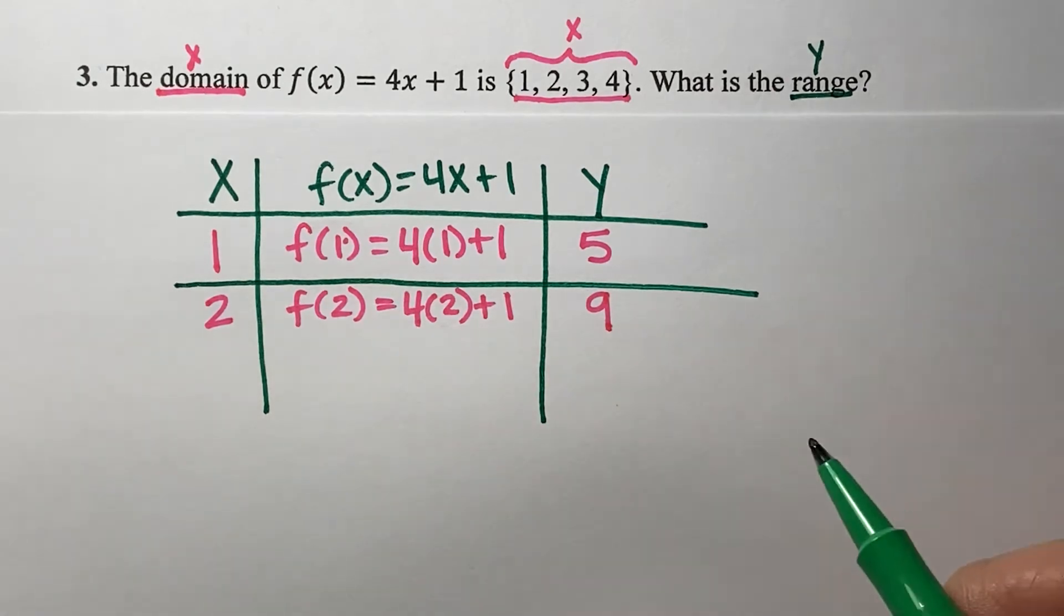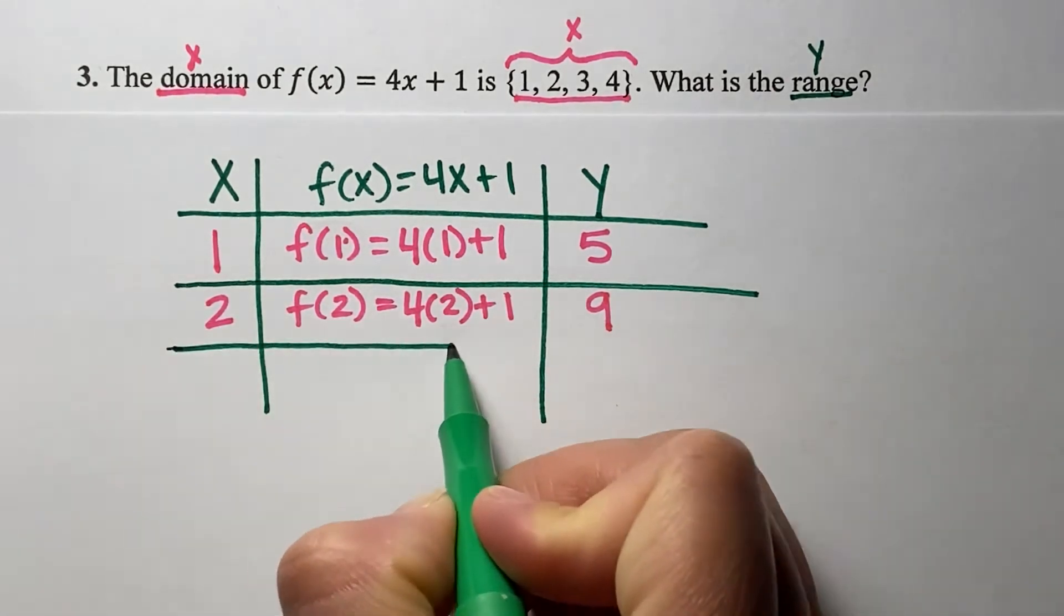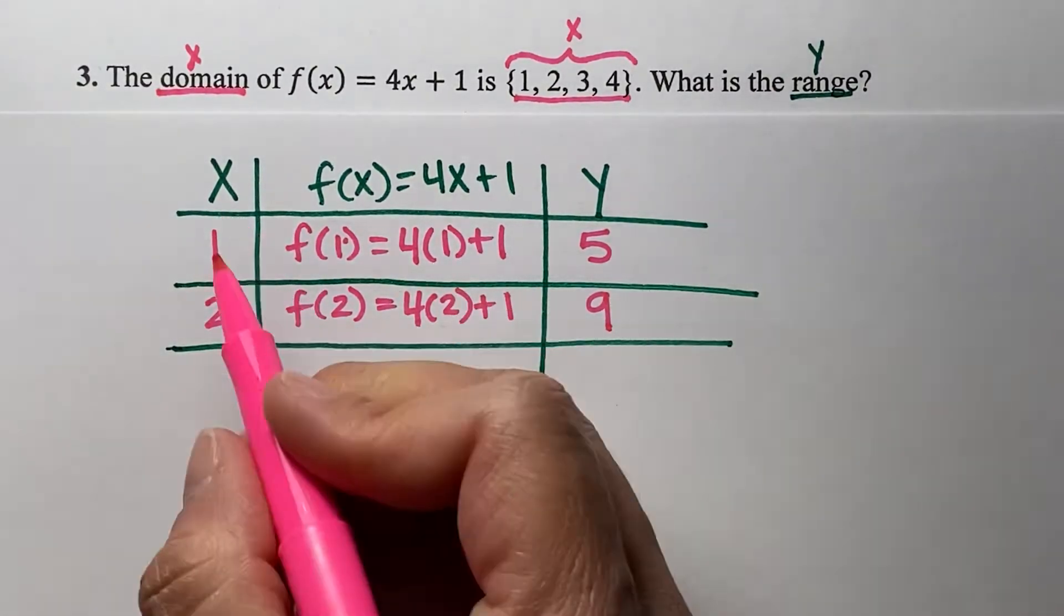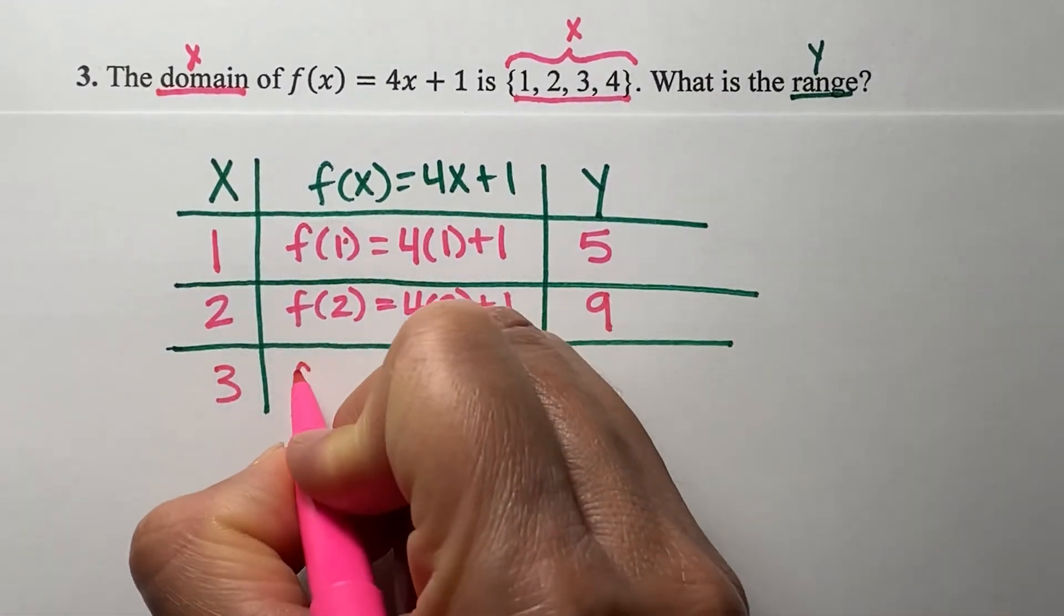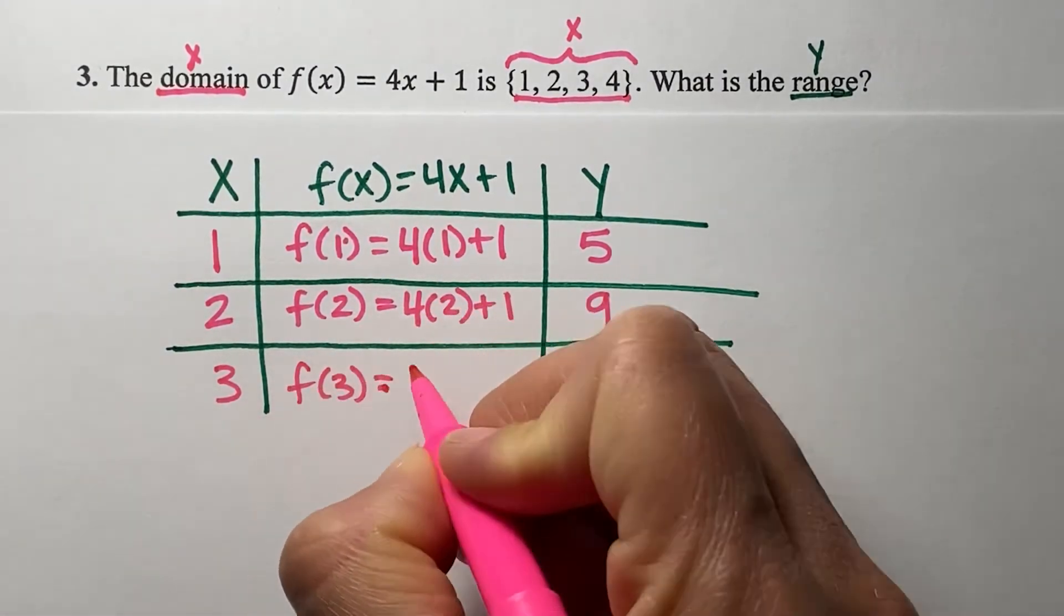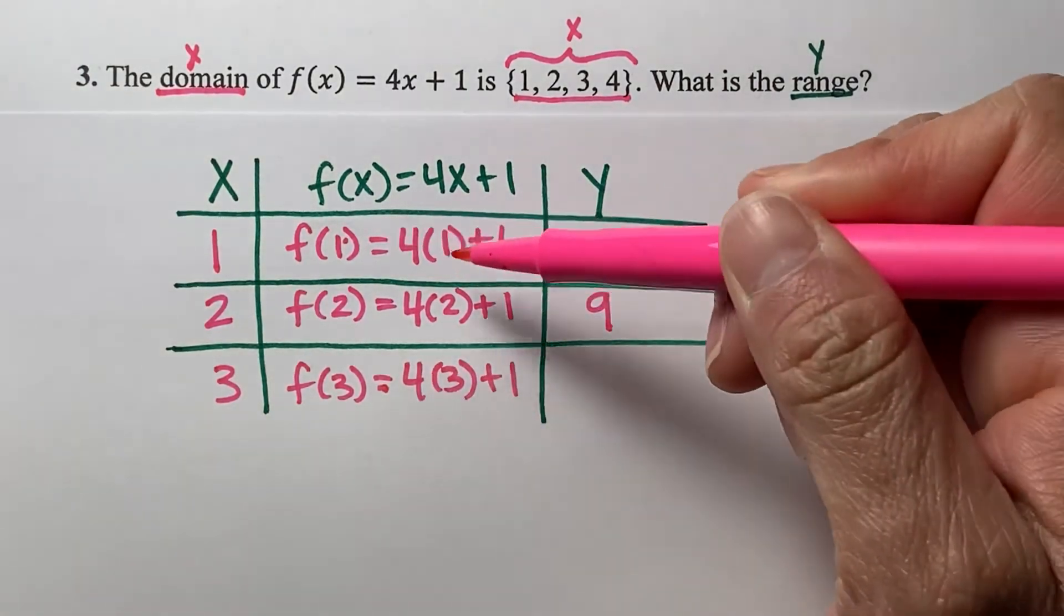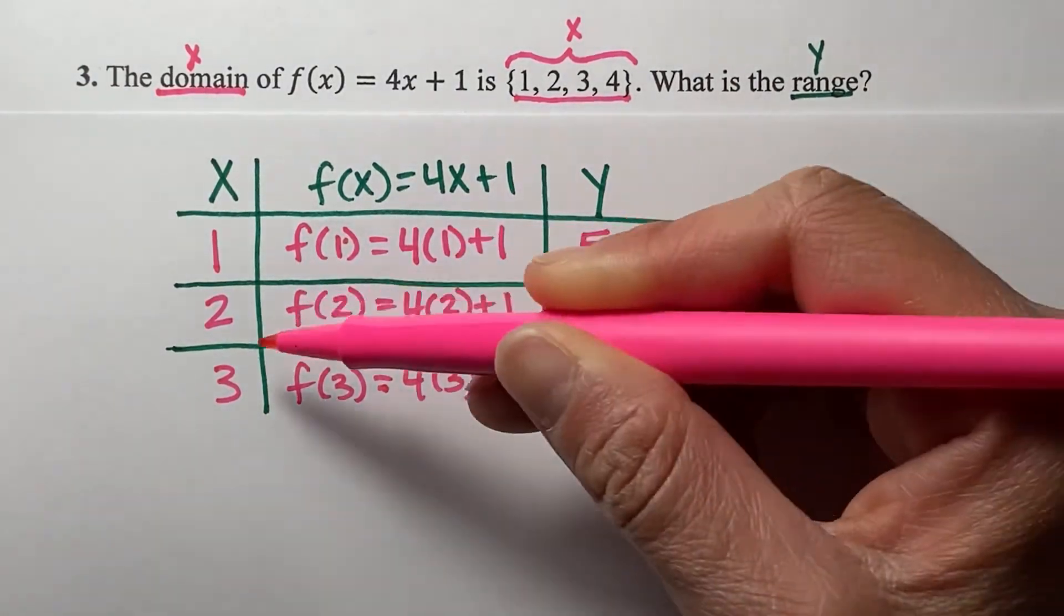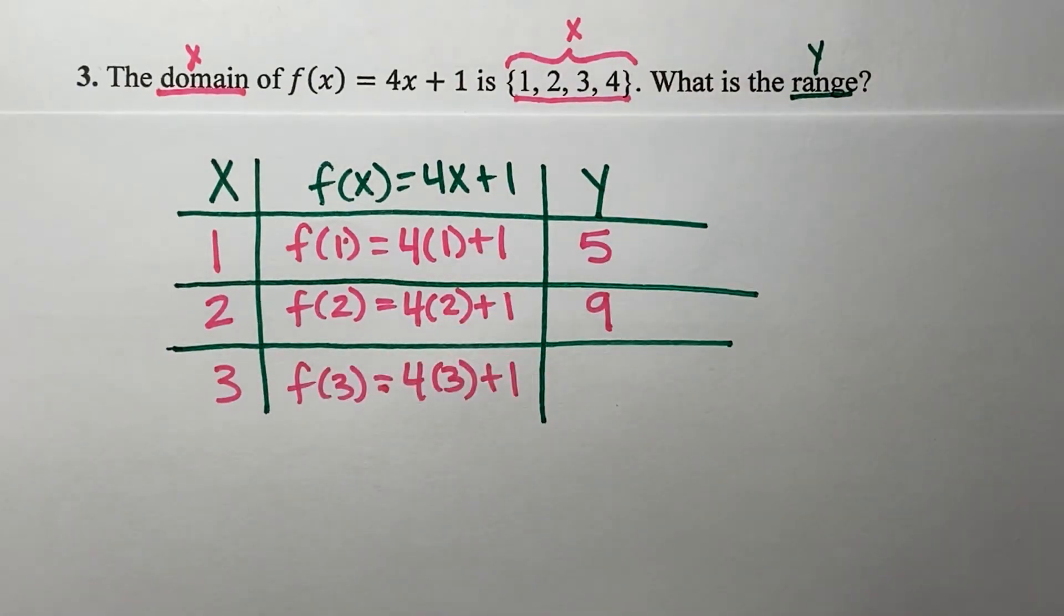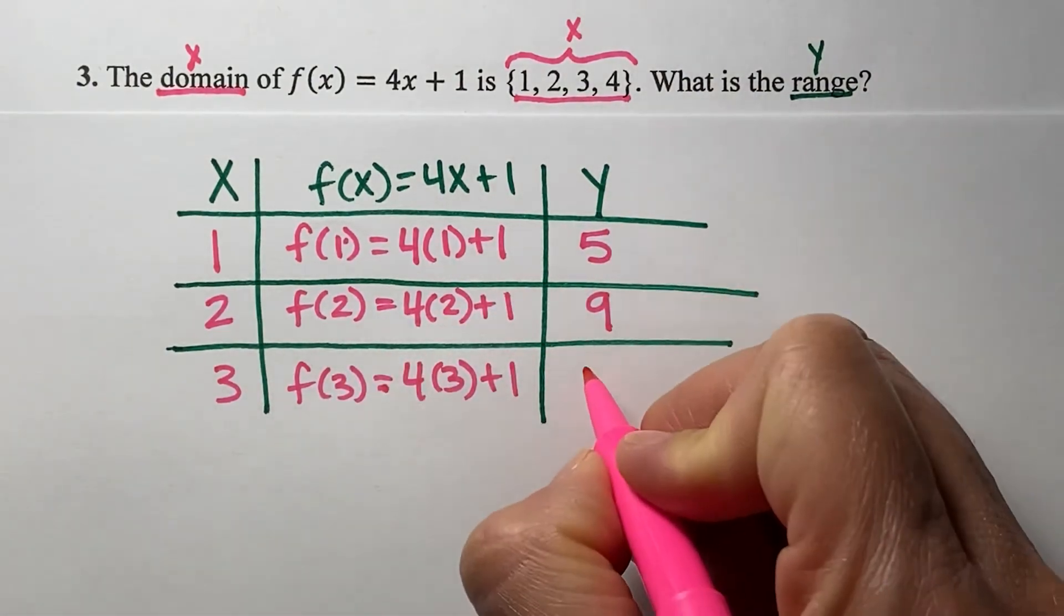I will do this again for 3. f(3) = 4 times 3 plus 1. Notice these are my x values and they're changing as I input my x value. So 4 times 3 is 12 plus 1 is 13.